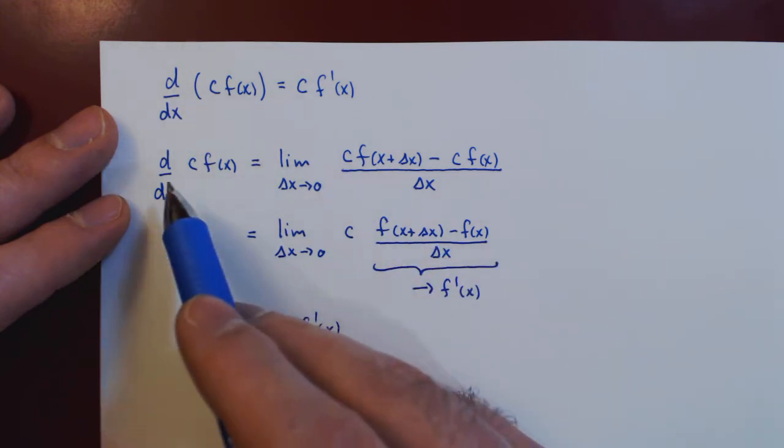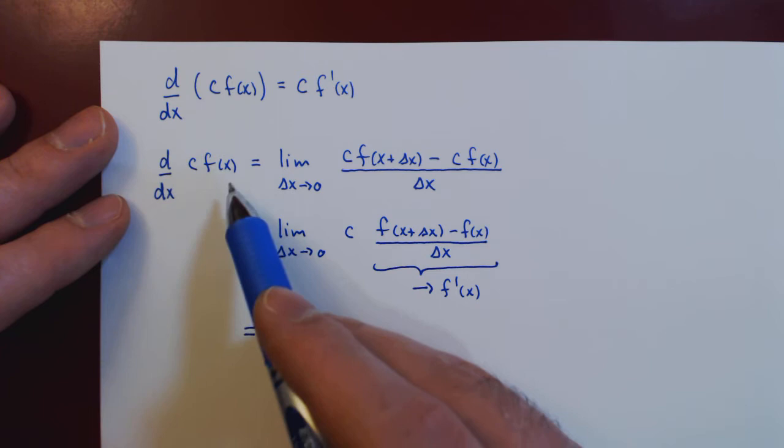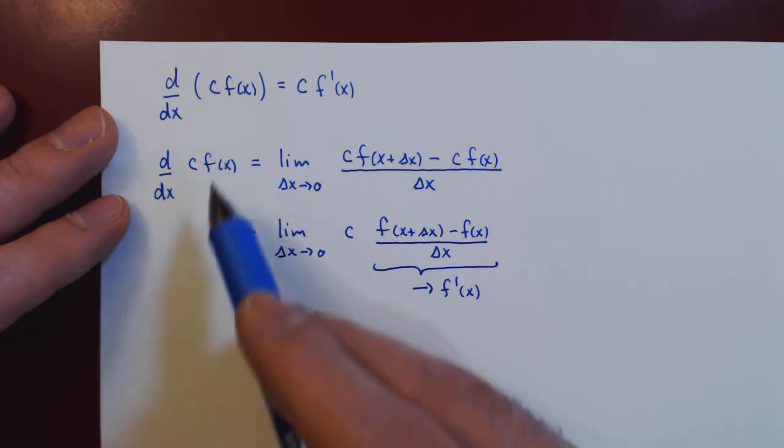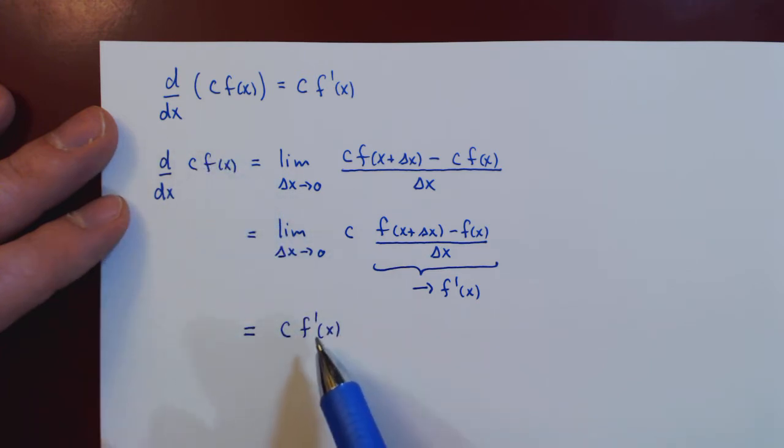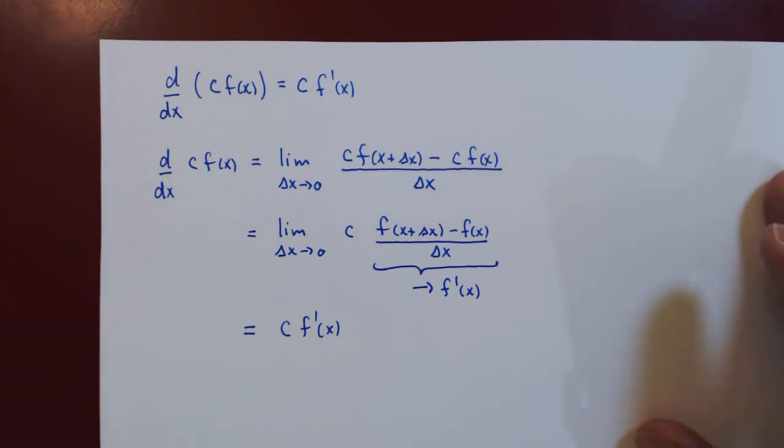And this proves that the derivative of a constant times the function f of x is simply the constant times the derivative of f of x. And that's it.